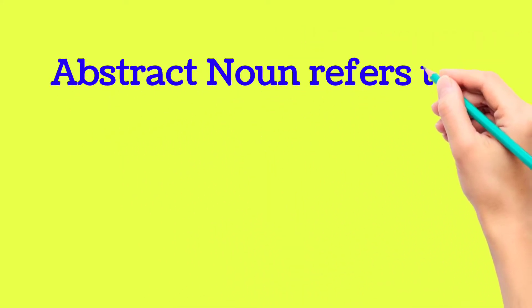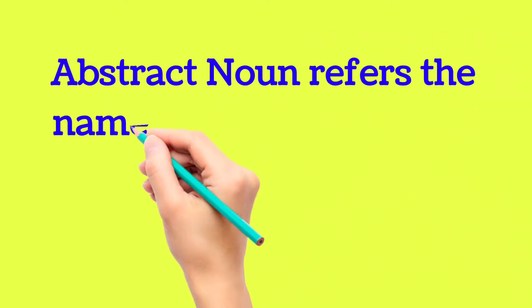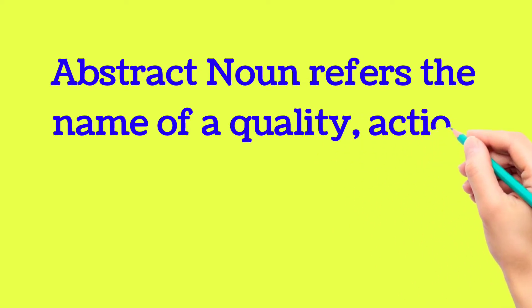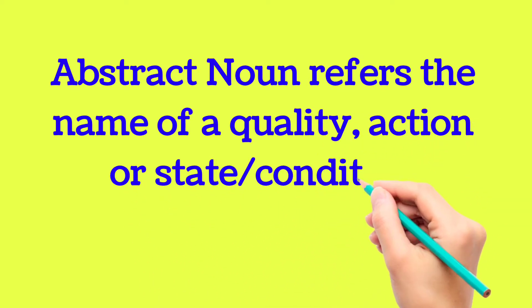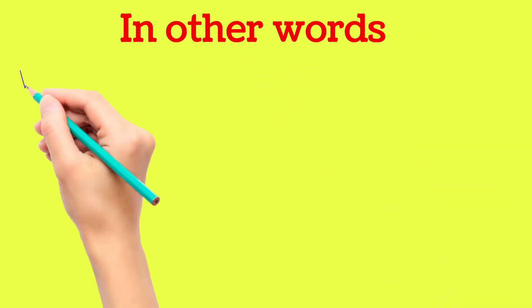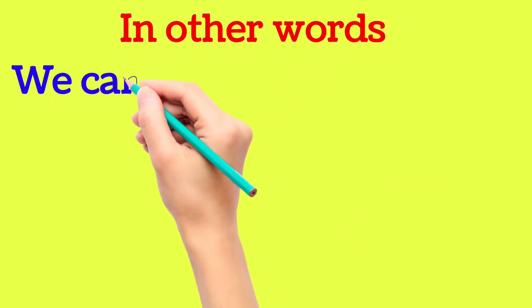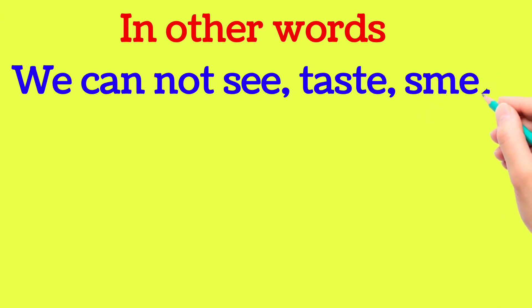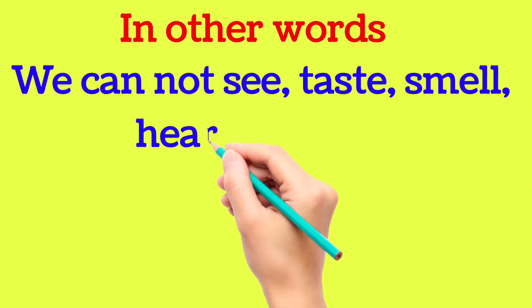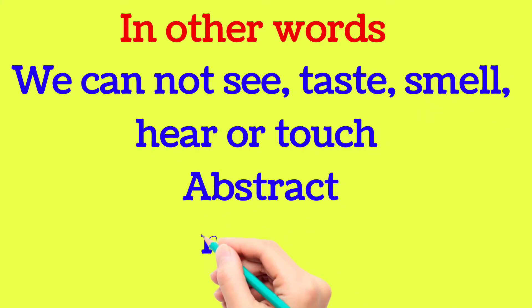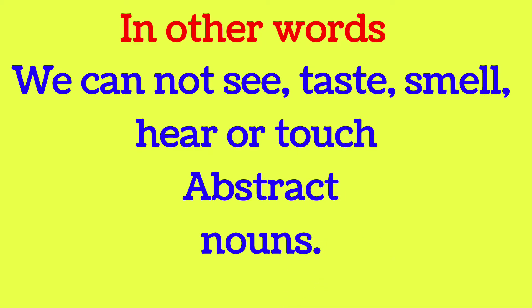Abstract noun refers to the name of a quality, action, or state, or condition. In other words, we can say we cannot see, taste, smell, hear, or touch abstract nouns.